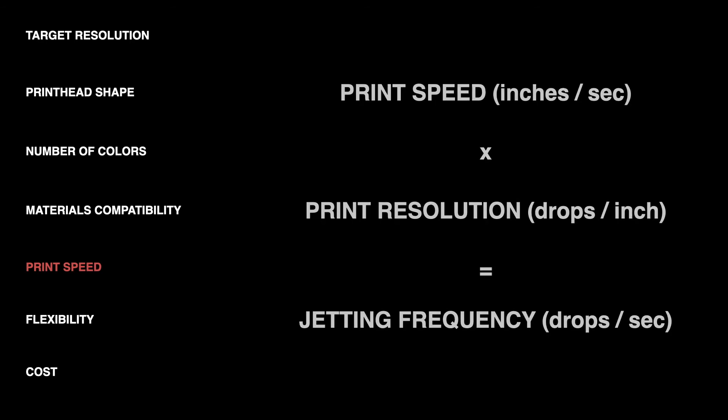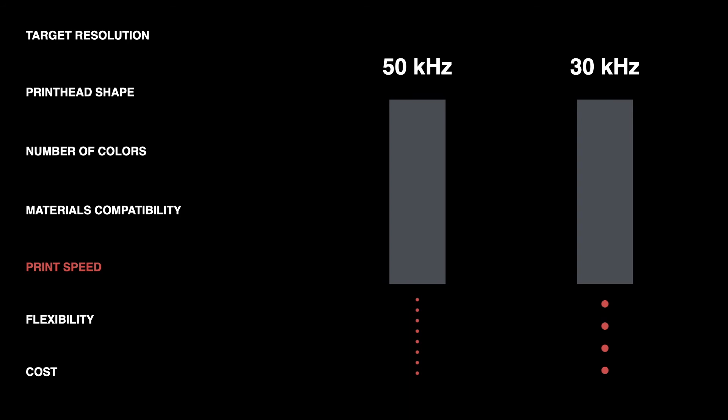One thing that's important to remember about the frequency that's specified for each head is it tends to be specified for small binary drops, so only one gray level. In the case of this printhead the manufacturer would spec this printhead at 50 kilohertz because that's what it can produce binary drops at. If you're trying to print grayscale the maximum frequency that this head could produce might only be 30 kilohertz. It's important to keep in mind that manufacturers tend to spec the heads for a binary waveform, the true maximum frequency might be different depending on which drop size you're trying to use.